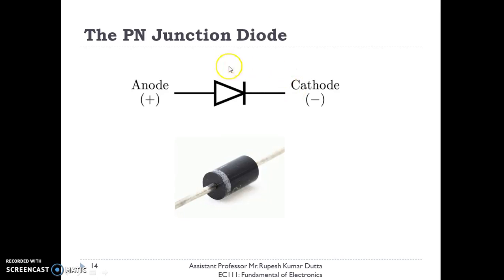This is the symbol of the PN junction diode. This is anode and this is cathode. You can see that this is a p-terminal, this is an n-terminal, and this is a real diode that we can get in market.